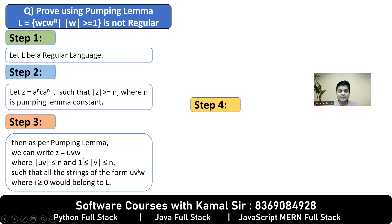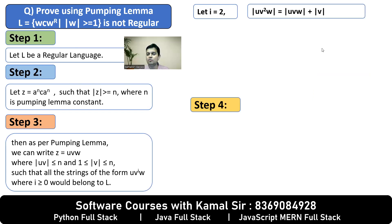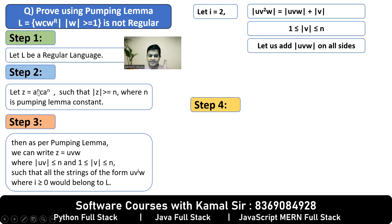Step number three. As per pumping lemma, this condition should be satisfied. So as I do every time, let i equal 2. Length of uvvw is length of uvw plus length of v. V's range is between 1 and N. Let us add the length of uvw on all the sides. Length of uvw is length of z and length of z is N plus N plus 1, that is 2N plus 1. So left becomes 1 plus 2N plus 1, right becomes N plus 2N plus 1.